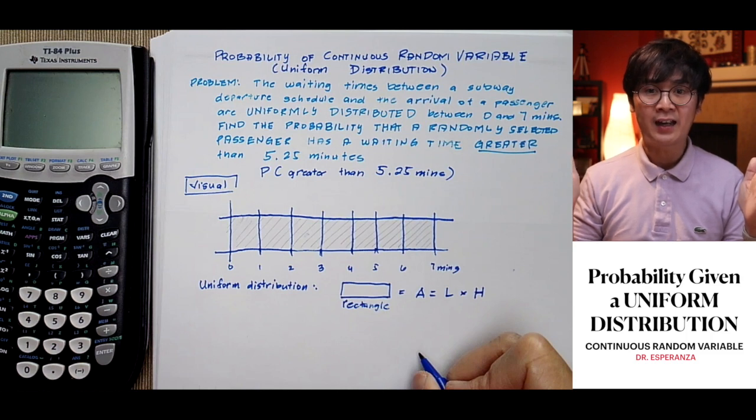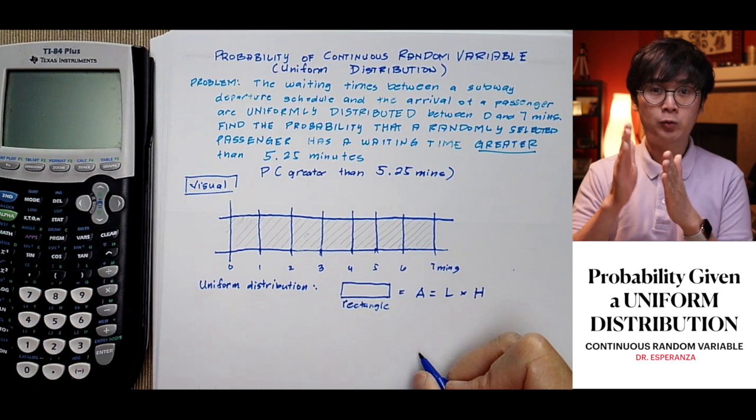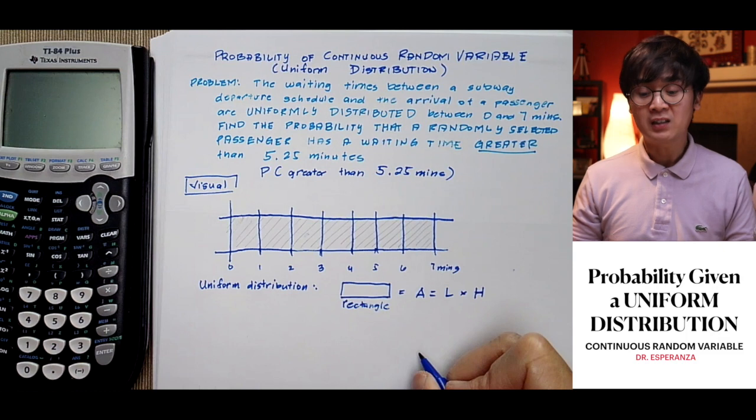we divide it into equal parts: 0 to 1, 1 to 2, 2 to 3, 3 to 4, 4 to 5, up to 7 minutes.